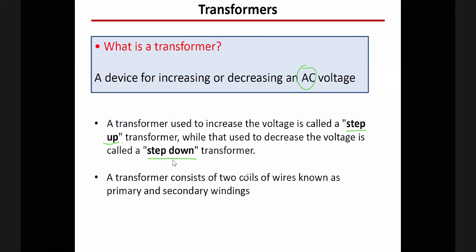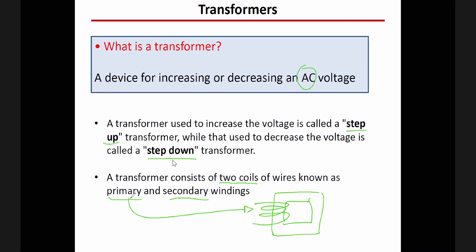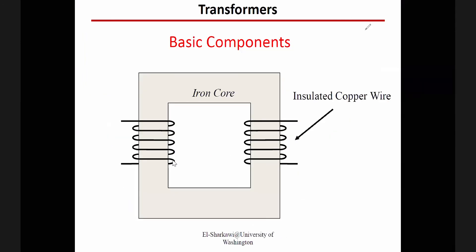Inside the transformer we have two coils: the first one is called the primary and the second one is called the secondary. As I mentioned before, in a magnetic circuit we always discussed one coil, but in a transformer we add a secondary coil. This is how the transformer looks — we have the core similar to before, we have the primary coil and the secondary coil. This is the basic operation principle of the transformer.